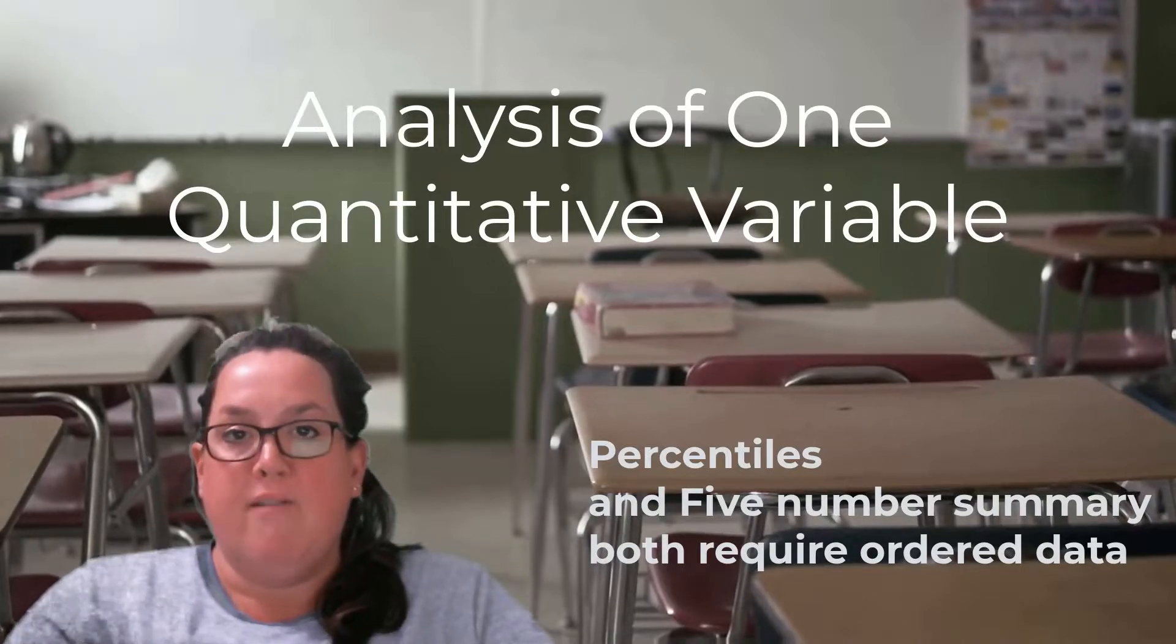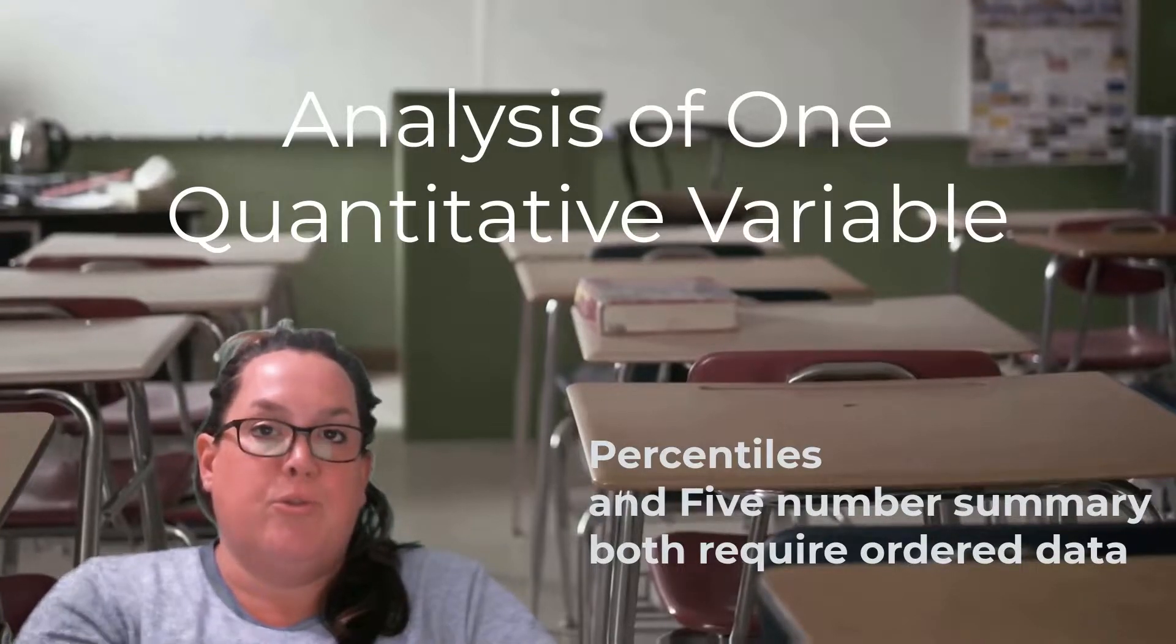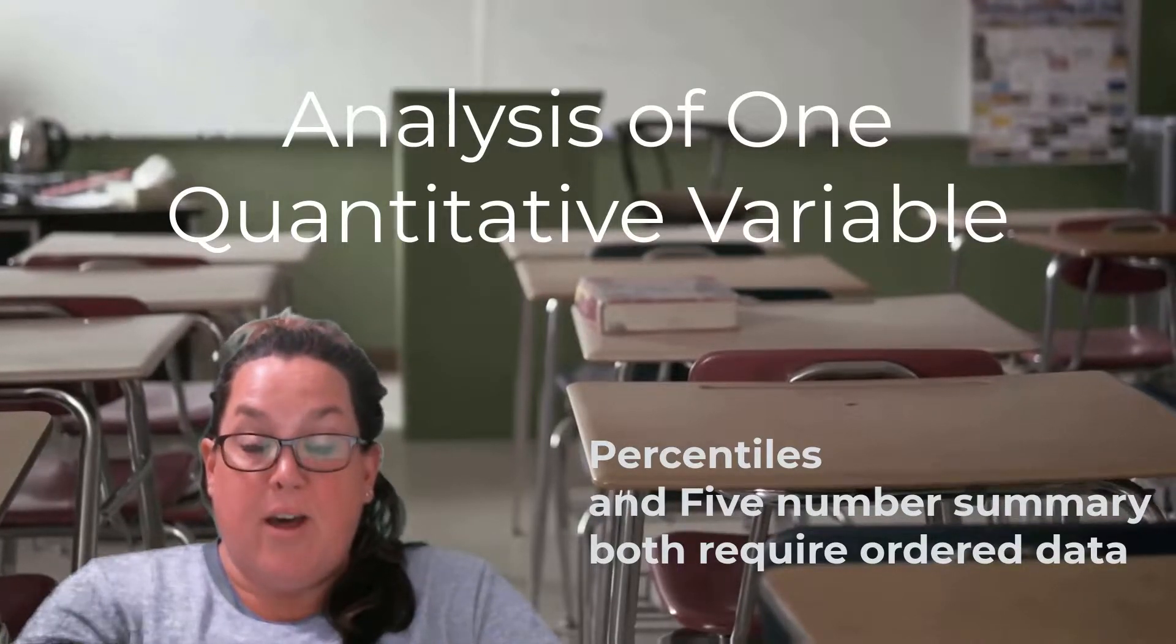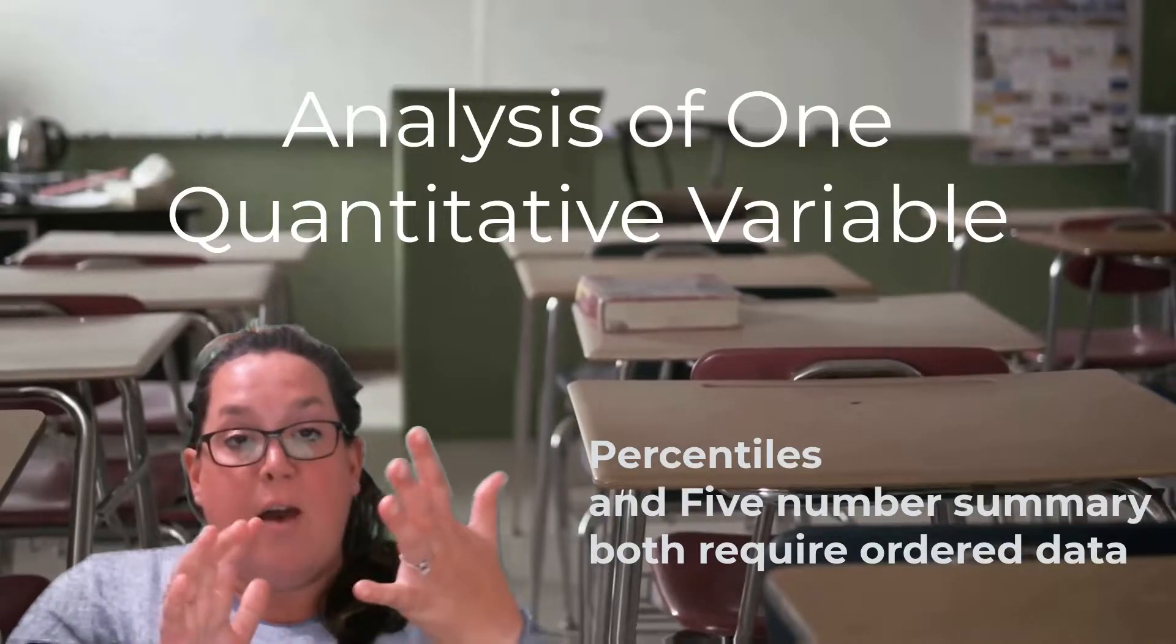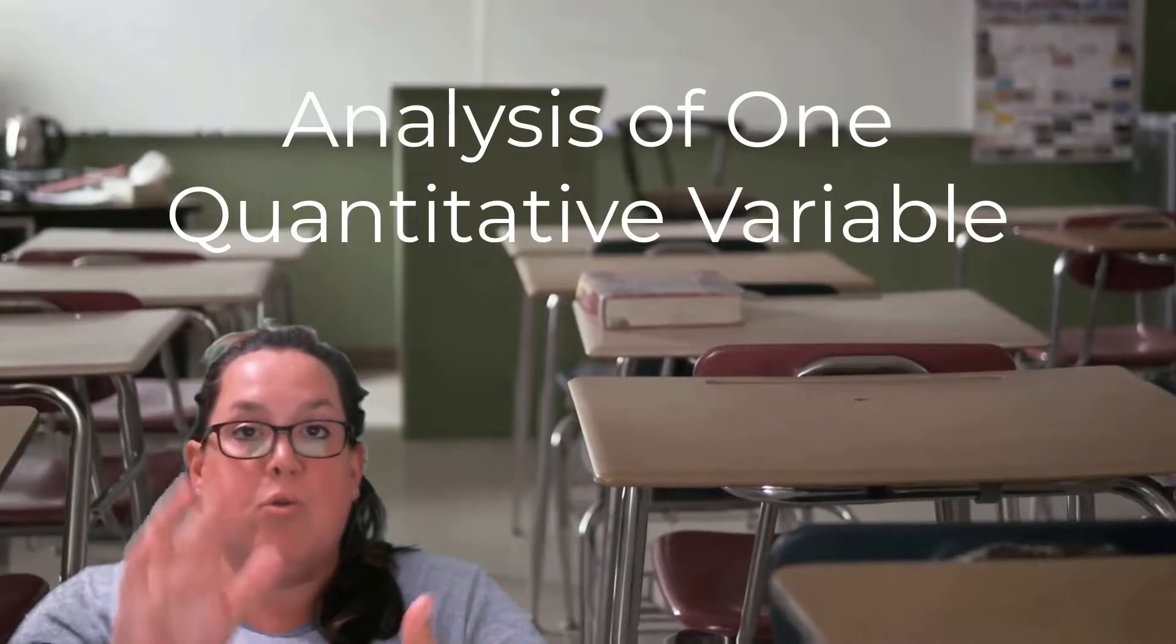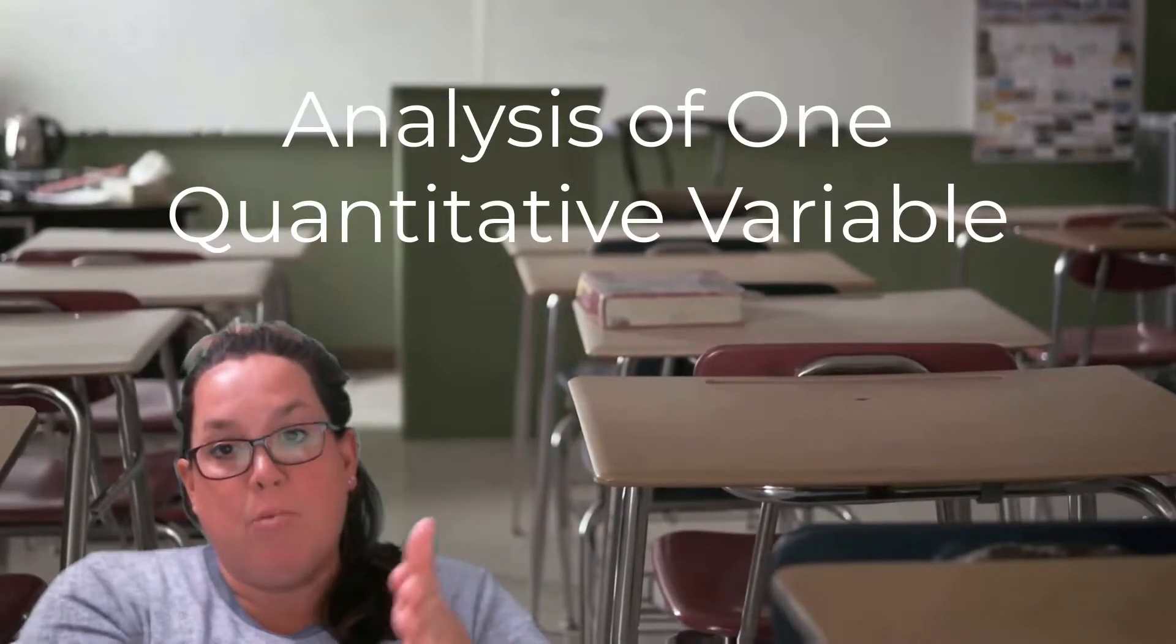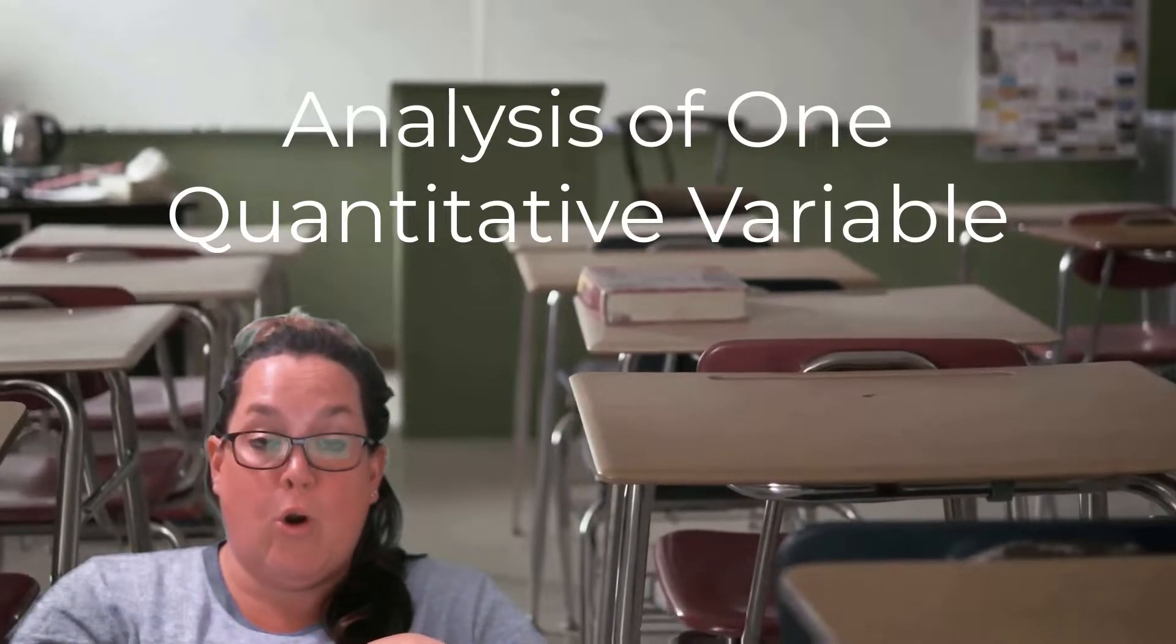For example, if I was on the 70th percentile, 70% of the data is less than or equal to that. So with the five number summary, we talked about how those five numbers - the minimum, Q1, the median, Q3, and the maximum - they break the data up into 25% chunks because the Qs stand for quarters.